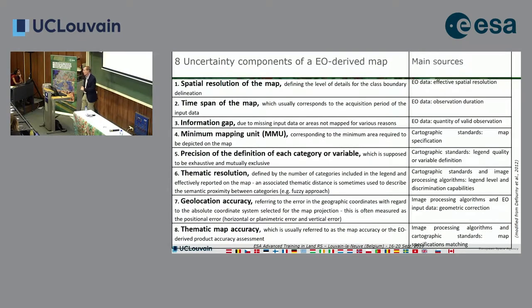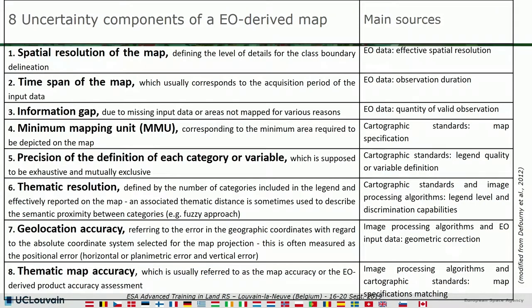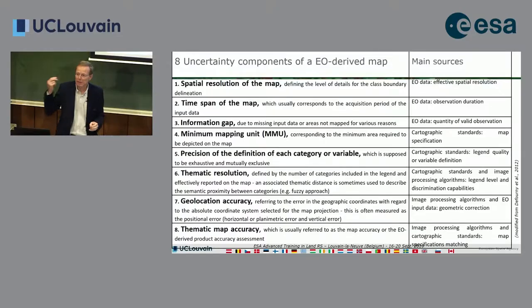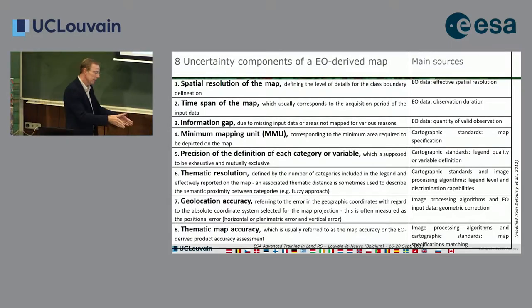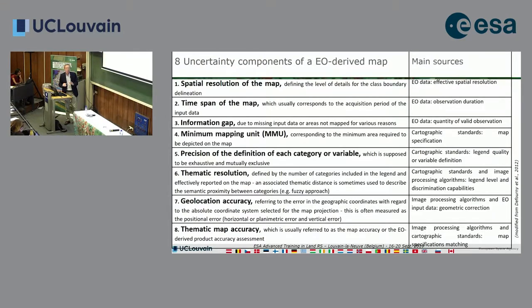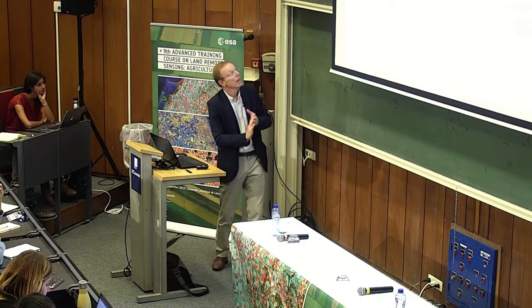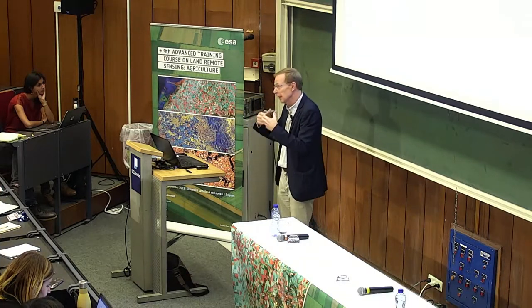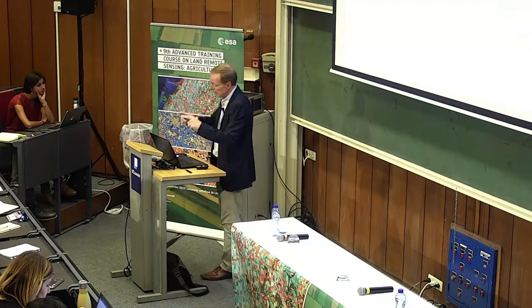The fourth component is the minimum mapping unit. In classical cartographic tradition, we never produce a measurement at the same size as the minimum mapping unit—we measure almost always three times better than we represent. In remote sensing, we measure at 10 meters and then claim we map at 10 meters, which is not in the tradition of cartography. The minimum mapping unit defines the minimum size of a feature represented on the map.